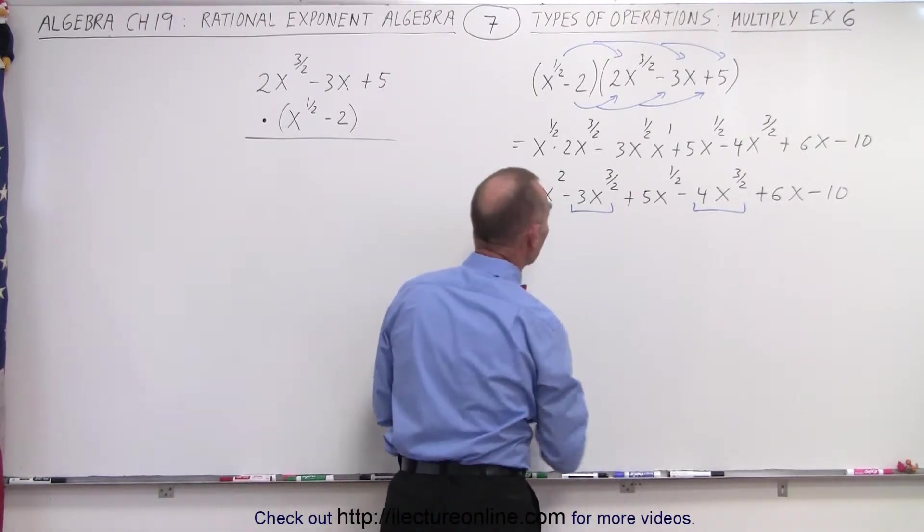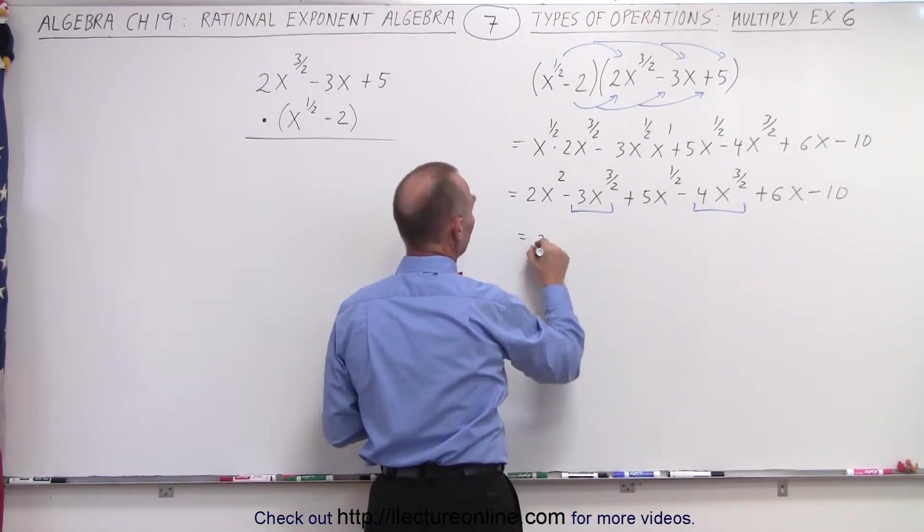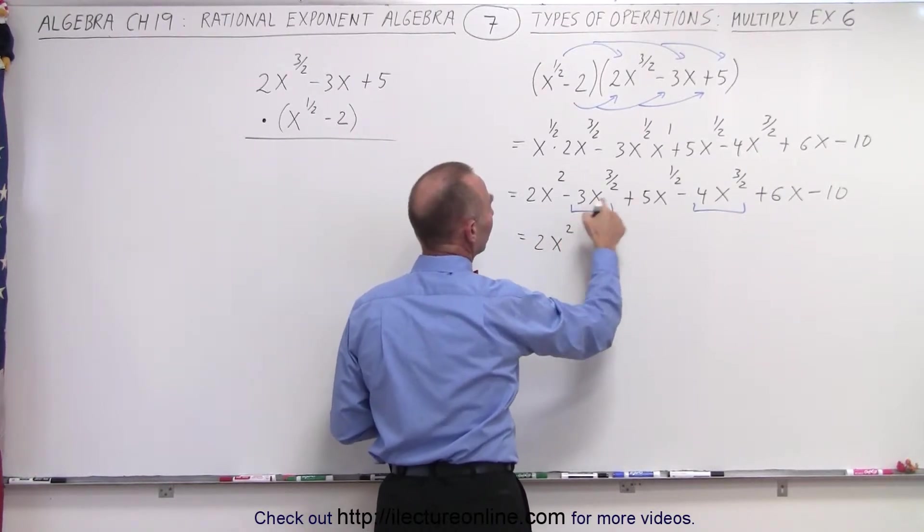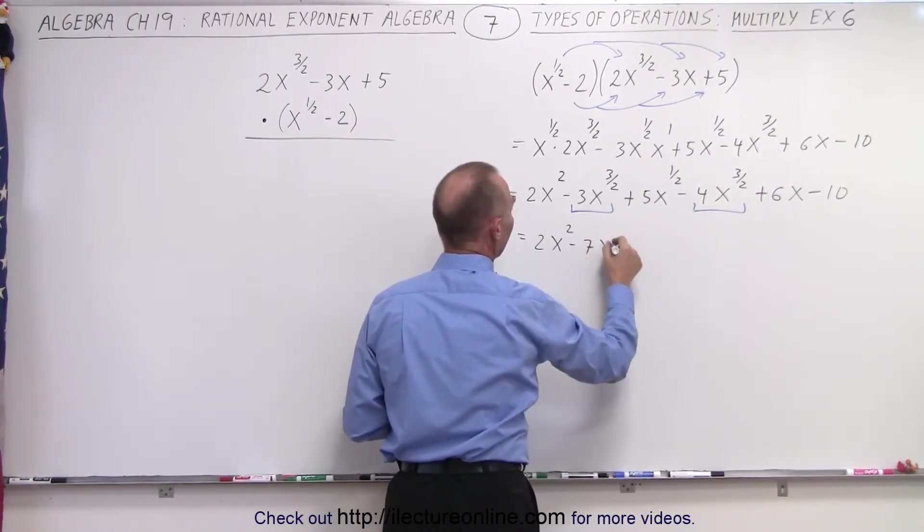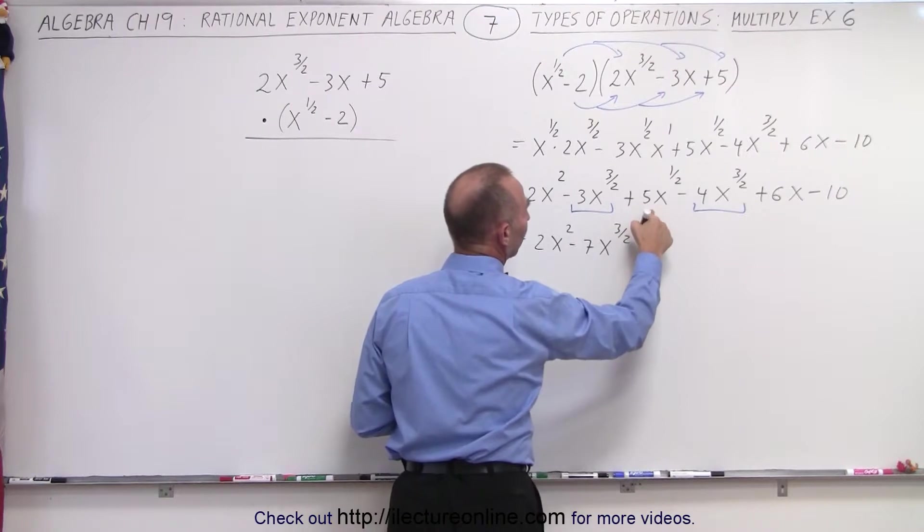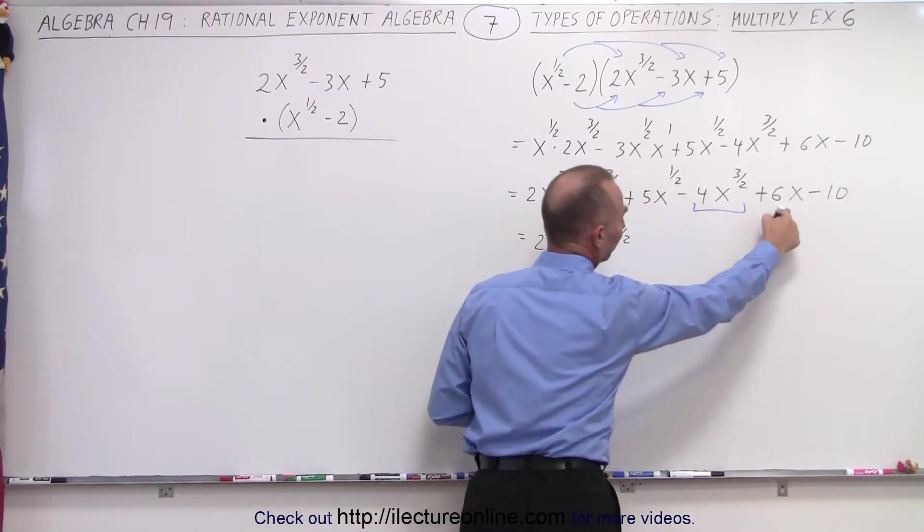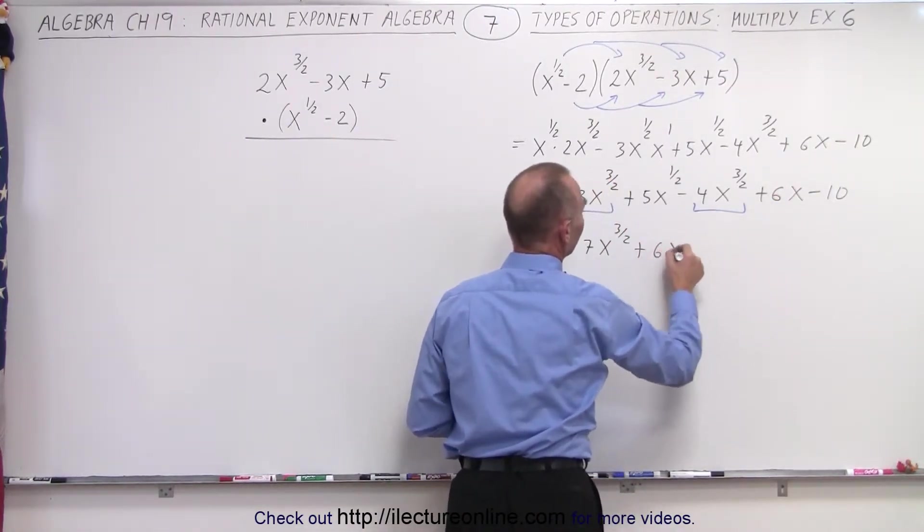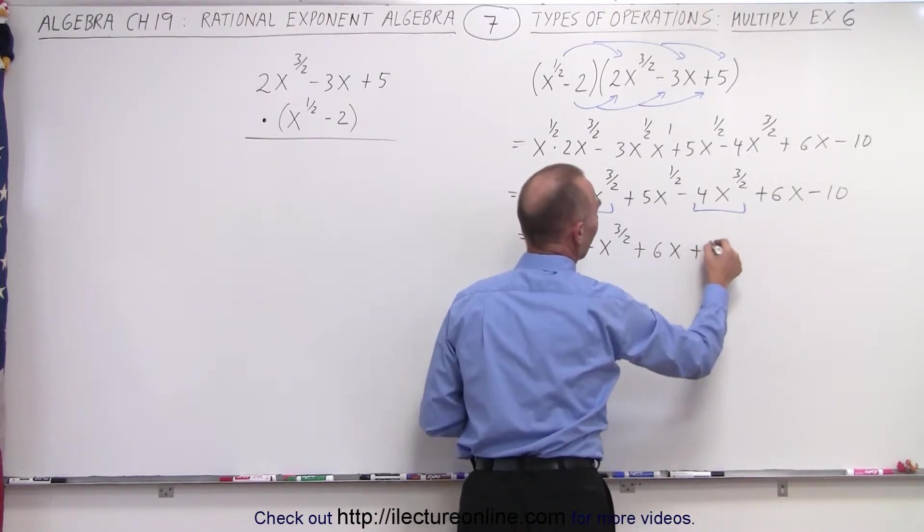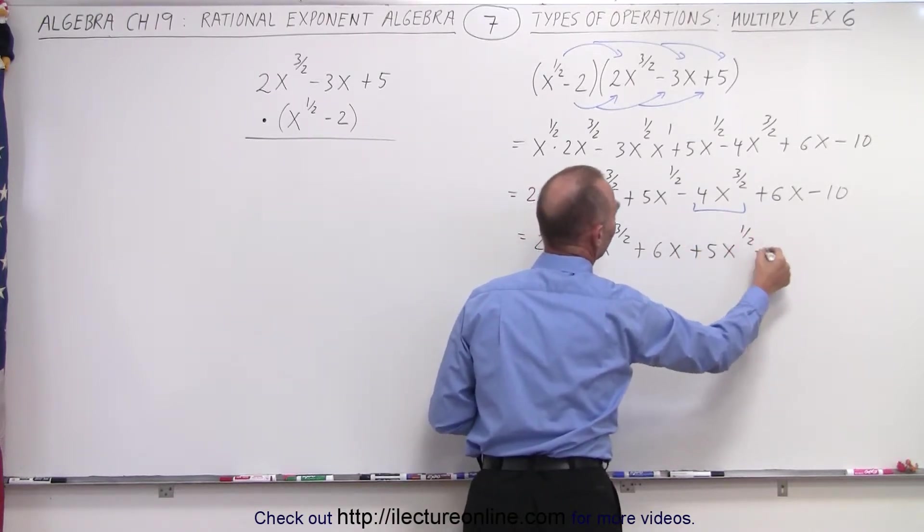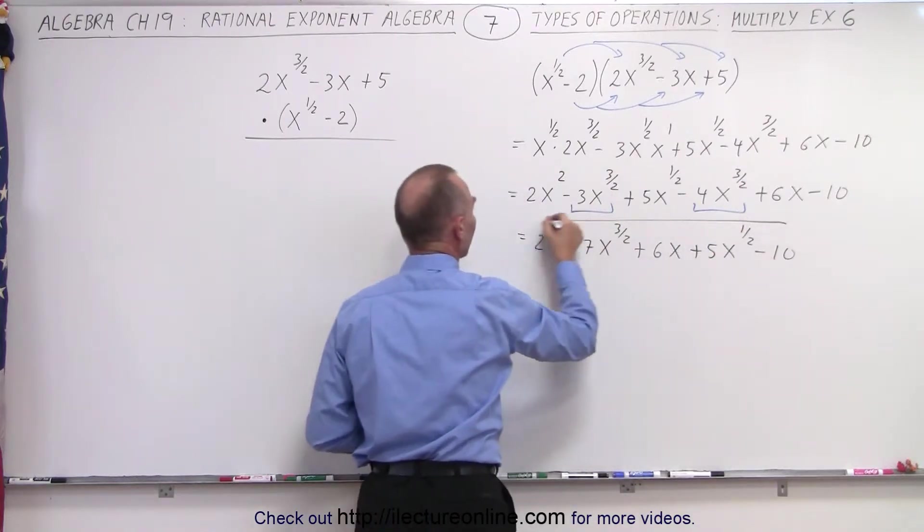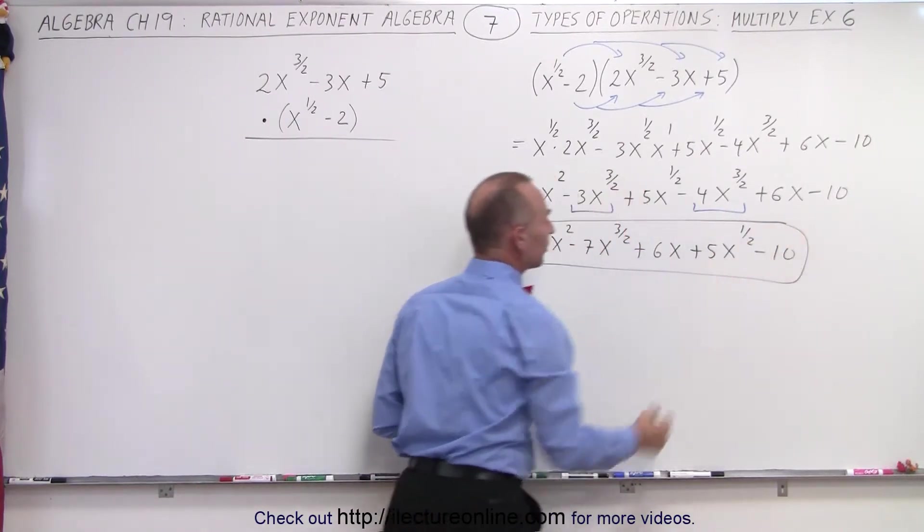The rest will stay the same. So here we get 2x squared, minus 3 minus 4 is minus 7x to the 3 halves. Then here we have, well, take this one first, because it's a higher power, plus 6x. Take this one, plus 5x to the 1 half, and minus 10. This here is the result of that multiplication.